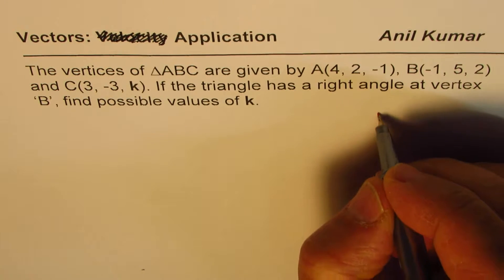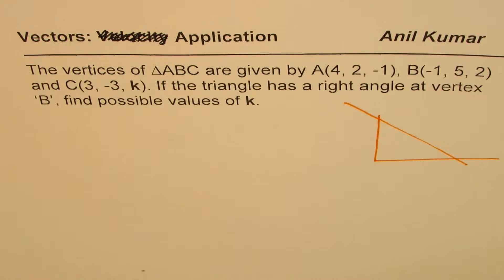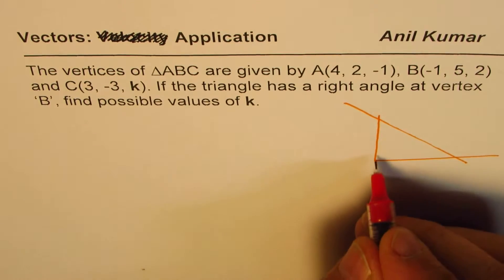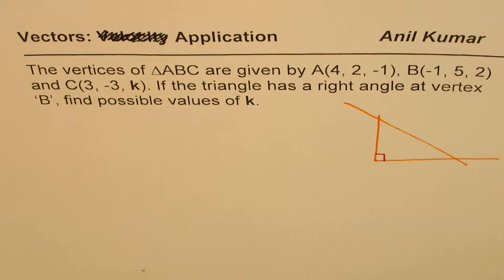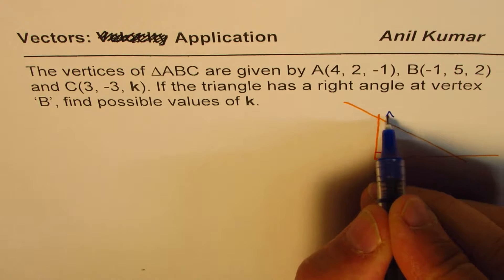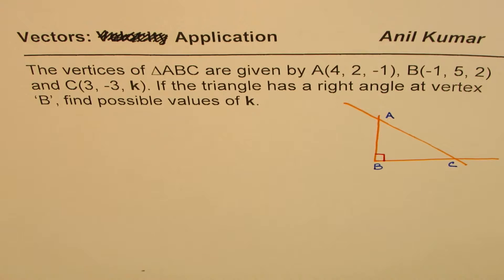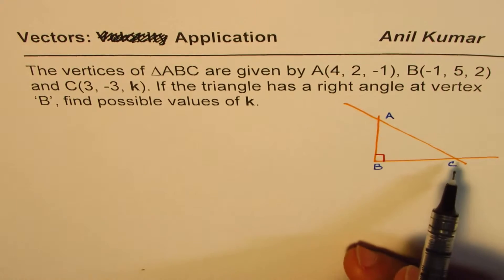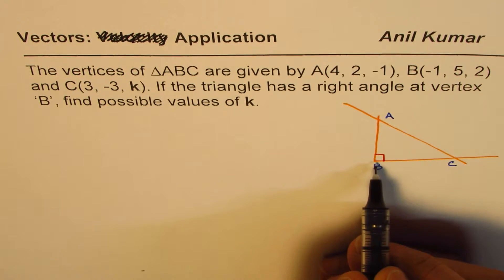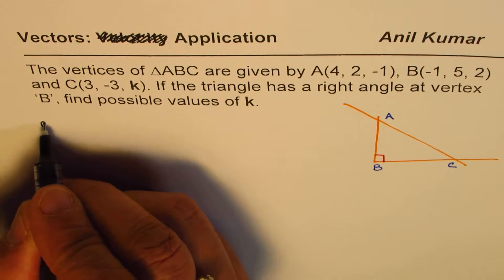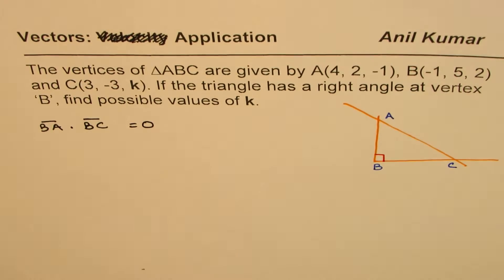Let's sketch the right triangle and figure it out. It is given that the triangle has a right angle at vertex B, so this vertex is B. We need to find the value of K so that the triangle formed is a right triangle. If we have a right angle at B, it means that the dot product of BA and BC should be equal to 0.